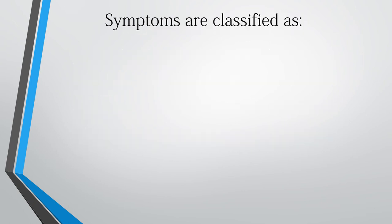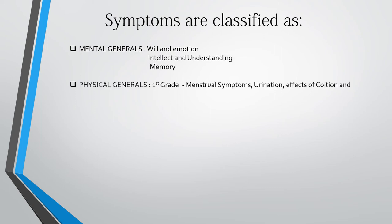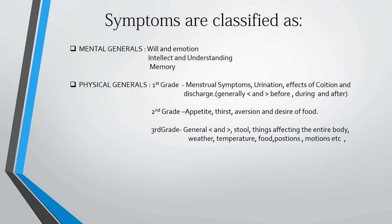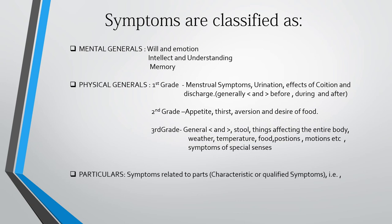According to Dr. Kent, symptoms are classified as mental generals, physical generals, and particulars. Mental generals include emotion, intellect, understanding, and memory. Physical generals are divided into: first grade — menstrual symptoms, urination, effects of coition, and discharges; second grade — appetite, thirst, aversions, and desires for food; third grade — general aggravation and amelioration, stool, things affecting the entire body, weather, temperature, food, positions, motions, and symptoms of special senses. Particulars are symptoms related to specific parts — location, sensation, modalities, and concomitants.